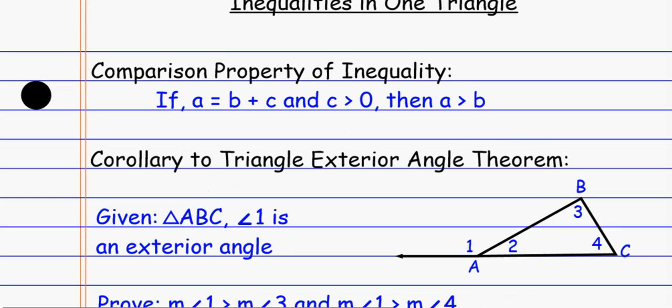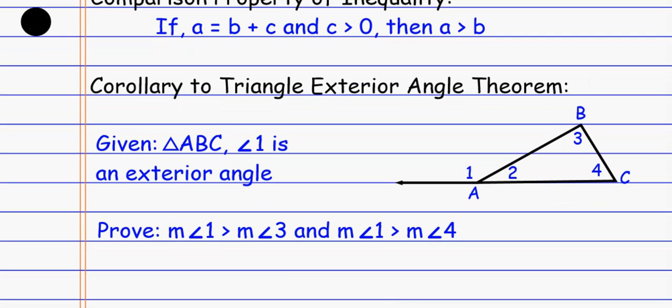We're going to use that in this first proof here: the corollary to the triangle exterior angle theorem. The exterior angle theorem says the exterior angle equals the sum of the remote interiors. So in this particular example, angle one equals angle three plus angle four. The corollary we want to prove here is that angle one is bigger than each of those angles — angle one has to be bigger than angle three, and angle one has to be bigger than angle four. So start thinking about how we would do that in terms of the comparison property.